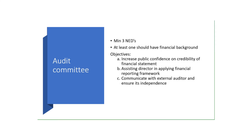Now the objectives of the audit committee: the first objective is that it increases public confidence and the credibility of financial statements — when the credibility of financial statements increases, public confidence also increases. Next is assisting directors in applying the financial reporting framework, helping them understand how to apply it in financial statements. Then, communicate with the external auditor and ensure its independence — ensuring that the external auditor hired is independent is also the audit committee's responsibility.